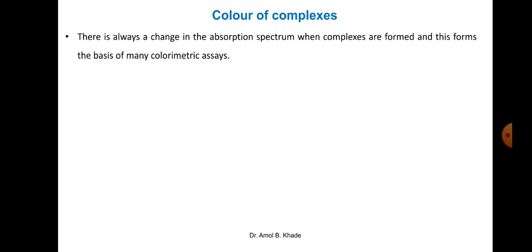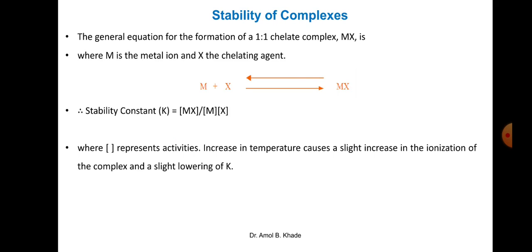Regarding color of complexes: there is always a change in the absorption spectrum when a complex is formed, which can be the basis for colorimetric assays. For colorless analytes that need to be measured quantitatively, they must be converted into a colored complex. For example, salicylic acid forms a colored complex with ferric chloride, which can then be measured conveniently by colorimetric methods.